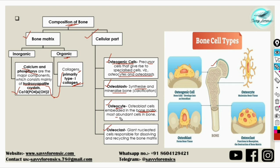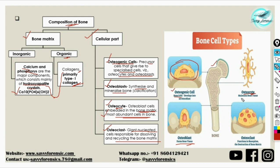Osteocytes are the most abundant cells in bone — this is important if asked in an exam. Osteocytes are essentially osteoblast cells that have become embedded in the bone matrix. The last cell type is the osteoclast — these are giant, multinucleated cells responsible for dissolving and recycling the bone matrix. In summary: osteogenic cells develop other bone cells; osteoblasts form bone tissue; osteocytes maintain bone tissue; and osteoclasts resorb and recycle the bone matrix.